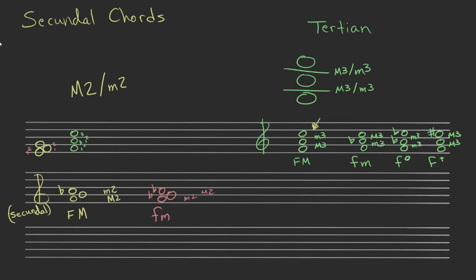The next one uses a minor second followed by another minor second: F, G flat, and then A double flat. This would be F diminished in the secundal sense. It sounds very chaotic because it's pulling three chromatic notes right next to each other — essentially F, G flat, A double flat — harmonically very close. It sounds really good if you need a lot of chaos or a strong diminished function in your music.